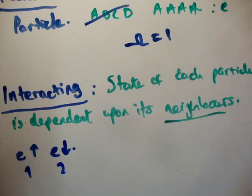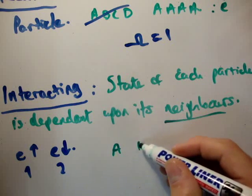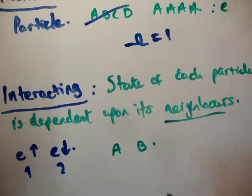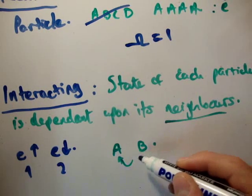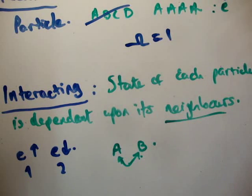However, non-interacting would be, for example, letters. Well, this is very arbitrary. But letter A doesn't depend on what letter B is. So these would be non-interacting particles.